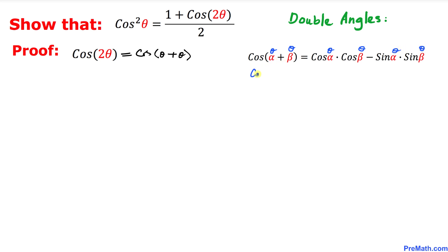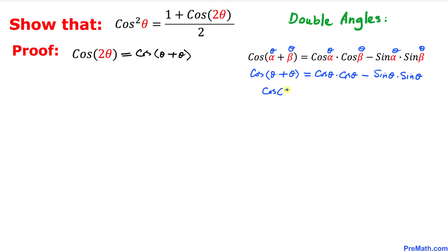This gives us cosine of theta plus theta equals cosine of theta times cosine of theta minus sine of theta times sine of theta. And on the left hand side, cosine of theta plus theta is the same as cosine of 2 theta.